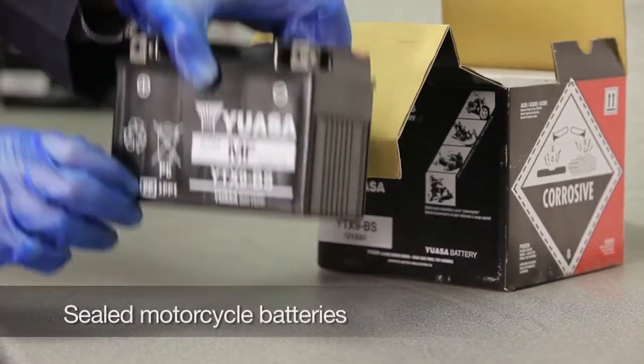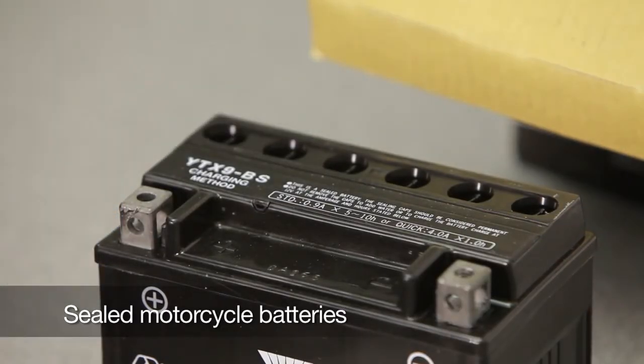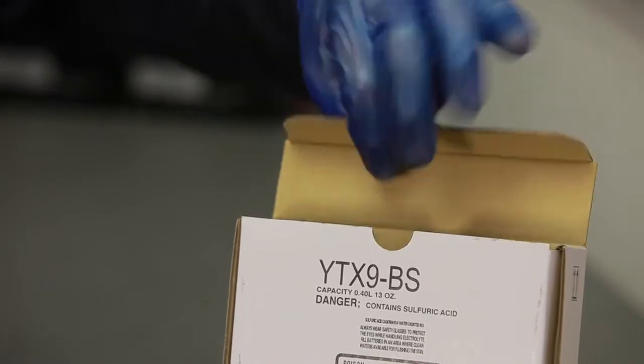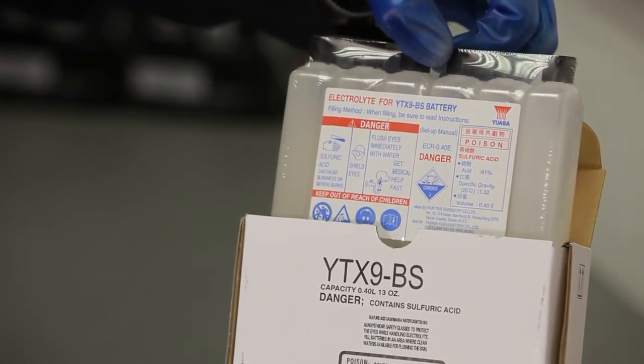To charge a sealed battery, again place the battery on a level surface and remove the sealing tape covering the filler ports. Remove the electrolyte container from the box. Only use the container that comes with the battery, as it contains the proper type and exact amount of electrolyte for this specific battery.